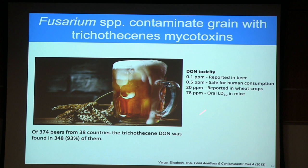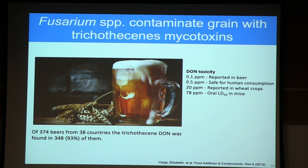Fortunately, levels reported in beer were no higher than 0.1 parts per million, and the UN established safe consumption level is 0.5 parts per million — so within safe limits. However, even consuming small doses of trichothecines is not a good thing. Severely affected wheat crops have shown levels as high as 20 parts per million, significantly higher than the safe dose, though lower than the 78 parts per million LD50 shown through oral dosing in mice.